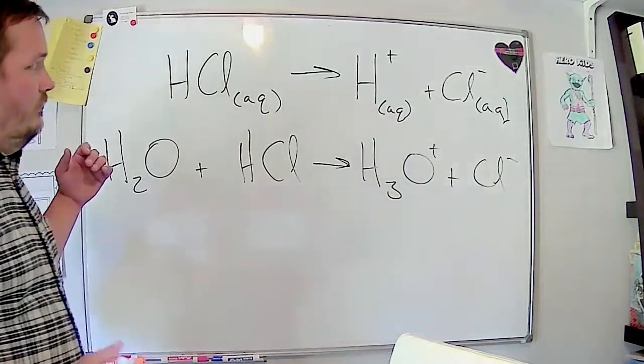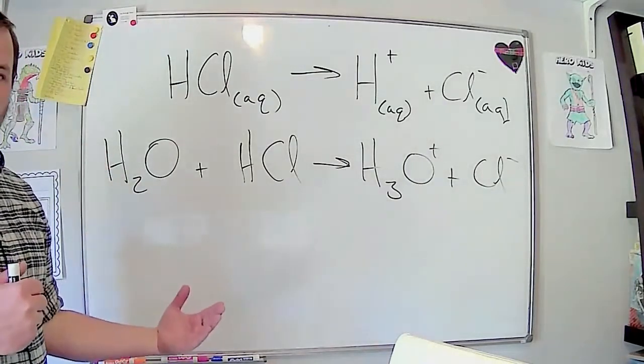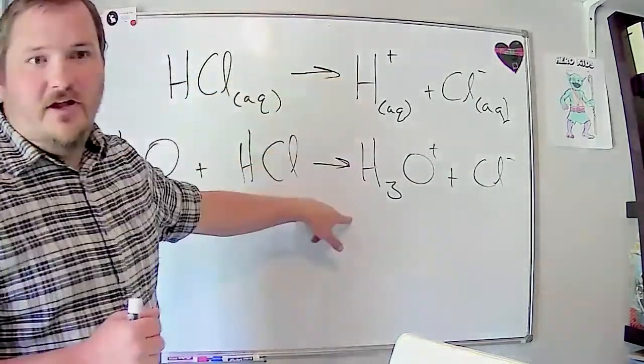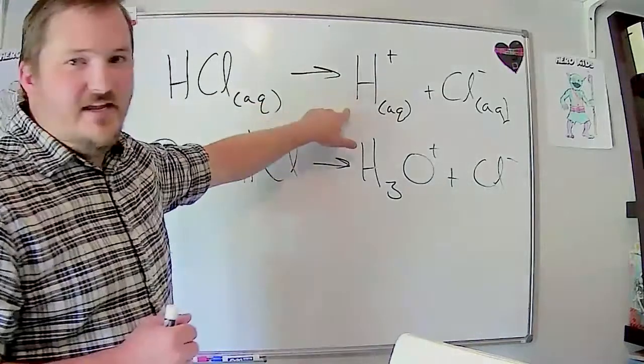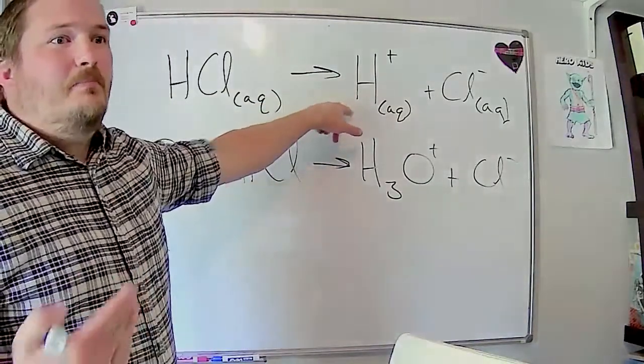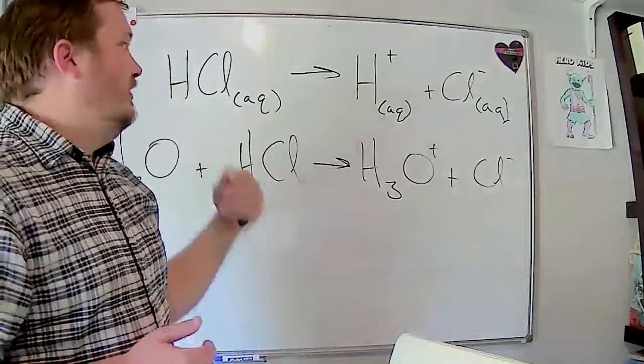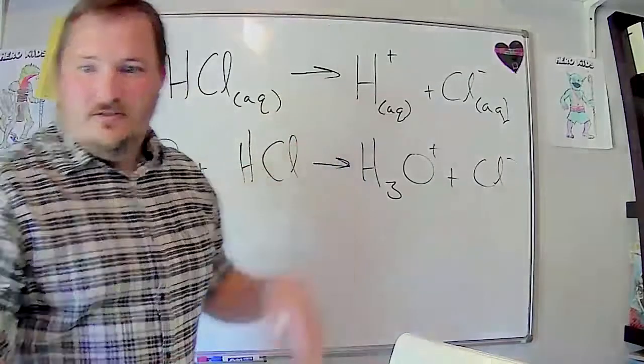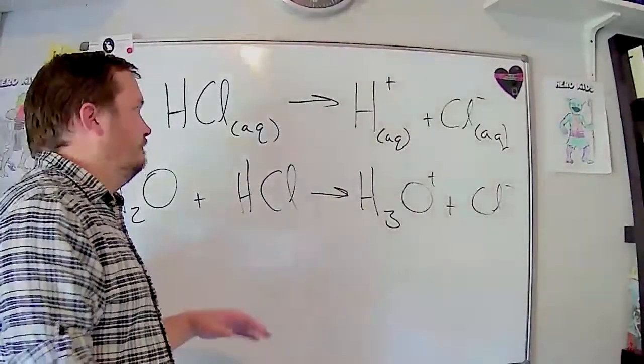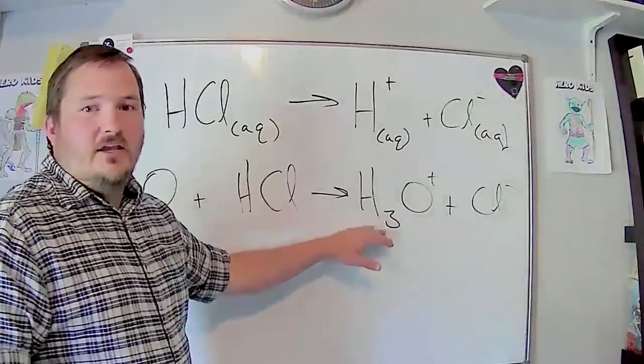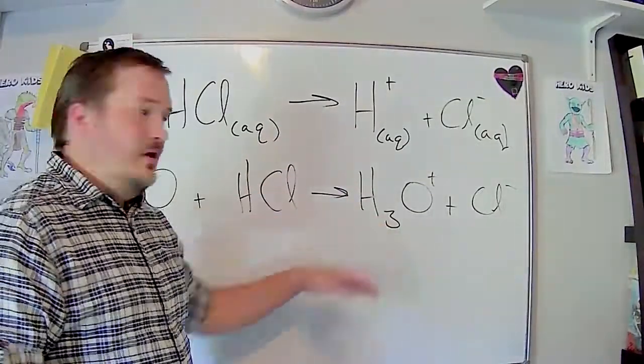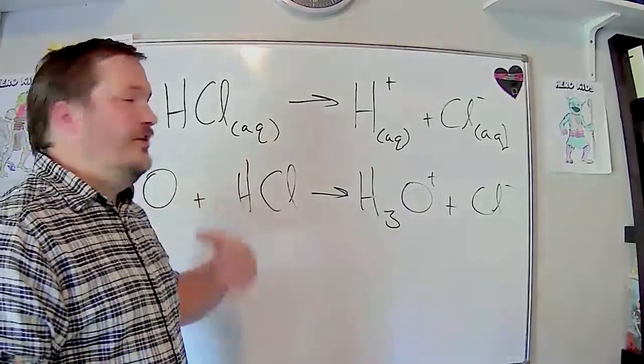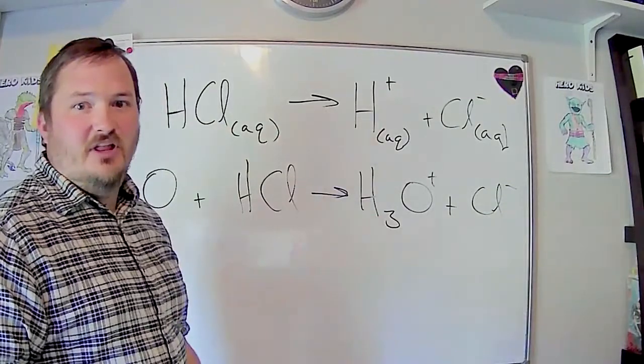Measuring how acidic a solution is generally comes down to how much of either of these two compounds we have. We don't ever really just have the H pluses around, but that's what they originally thought. That's what Arrhenius's original definition of an acid was - anything that adds H3O+ when you put it in a solution. This is more accurate, so this is the way we use it now. But that's why pH is described as pH, because originally they thought they were just talking about H pluses.